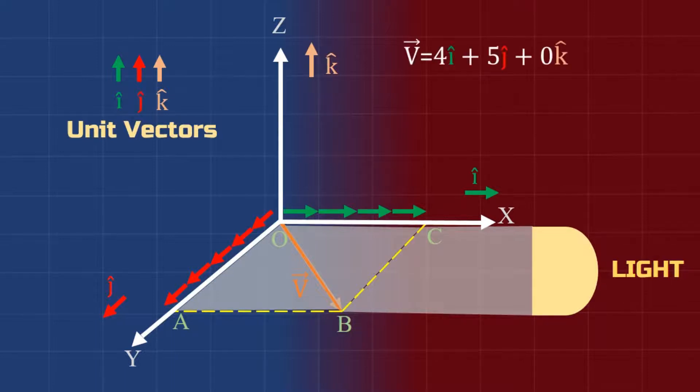So we can write the vector V as 4i hat plus 5j hat plus 0k hat that represents the vector capital V. We can find the magnitude of the vector capital V as square root of the sum of the squares of the x and y component, and the direction of the vector capital V as tan inverse of y by x component.